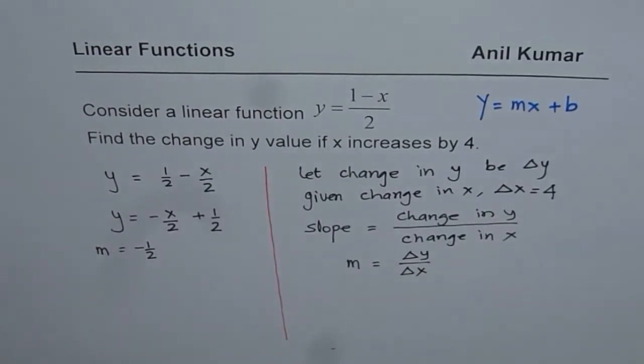We are writing it as y equals mx plus b, right? You know coefficient of x is the slope. So minus half is the slope.